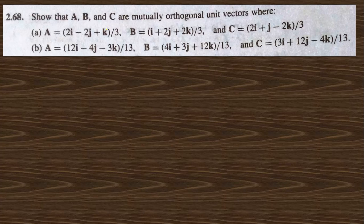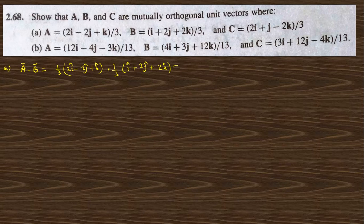Next question: show that vectors A, B, C are mutually orthogonal unit vectors. Orthogonal means they are perpendicular to each other. Computing A dot B: (1/3)(2i-cap minus 2j-cap plus k-cap) dot (1/3)(i-cap plus 2j-cap plus 2k-cap) equals (1/9)(2 minus 4 plus 2) equals zero.